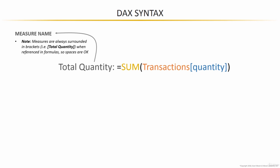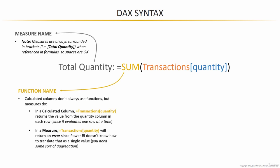The next component immediately following the equal sign is the function name. Calculated columns don't require functions, but measures do. A calculated column could have what's called a naked reference, meaning it points to a column on its own — not an aggregated version of that column.